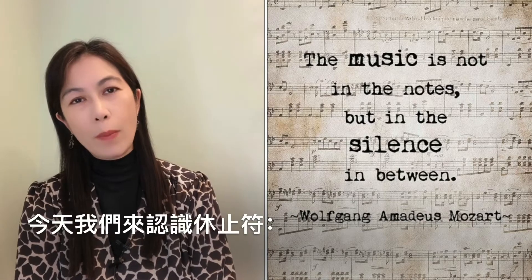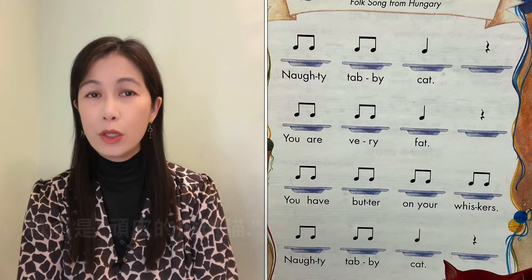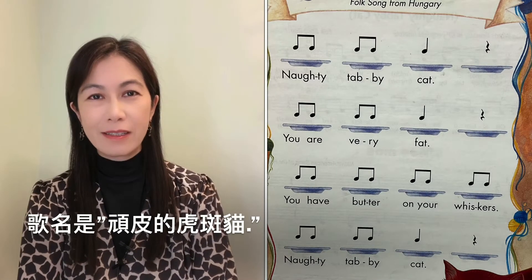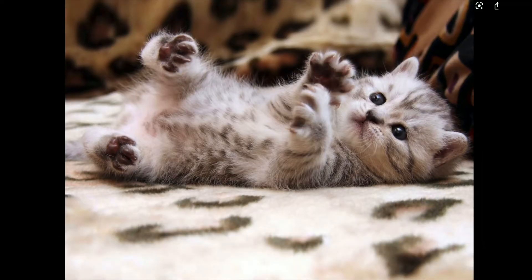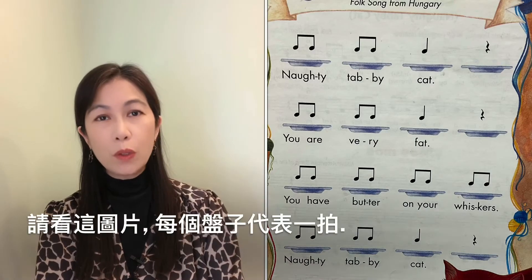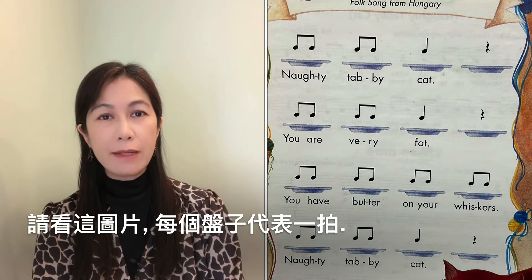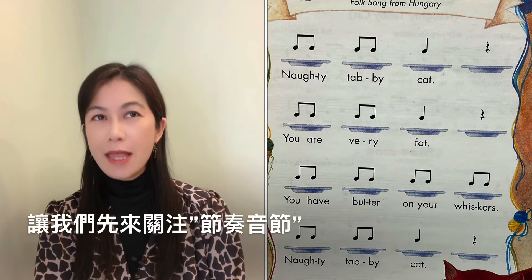Today we will pay attention to the silent beat, which is a quarter rest. This song is called 'Naughty Tabby Cat.' There are only four phrases in the song. Look at this picture — each plate represents one beat.